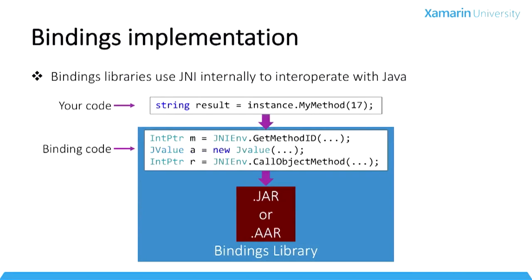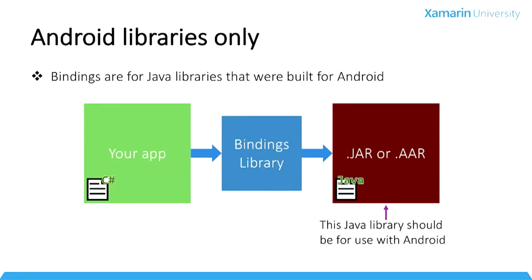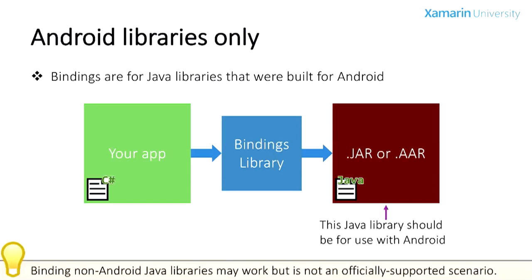Instead, a bindings library simplifies your client code. If you take the time to build a bindings library then your client code looks like the lower box here on the screen. Behind the scenes the bindings libraries use JNI — the cool thing is you don't have to write the JNI code. You can create bindings libraries for any jar file or Android archive file that was originally targeted to be used with Android.